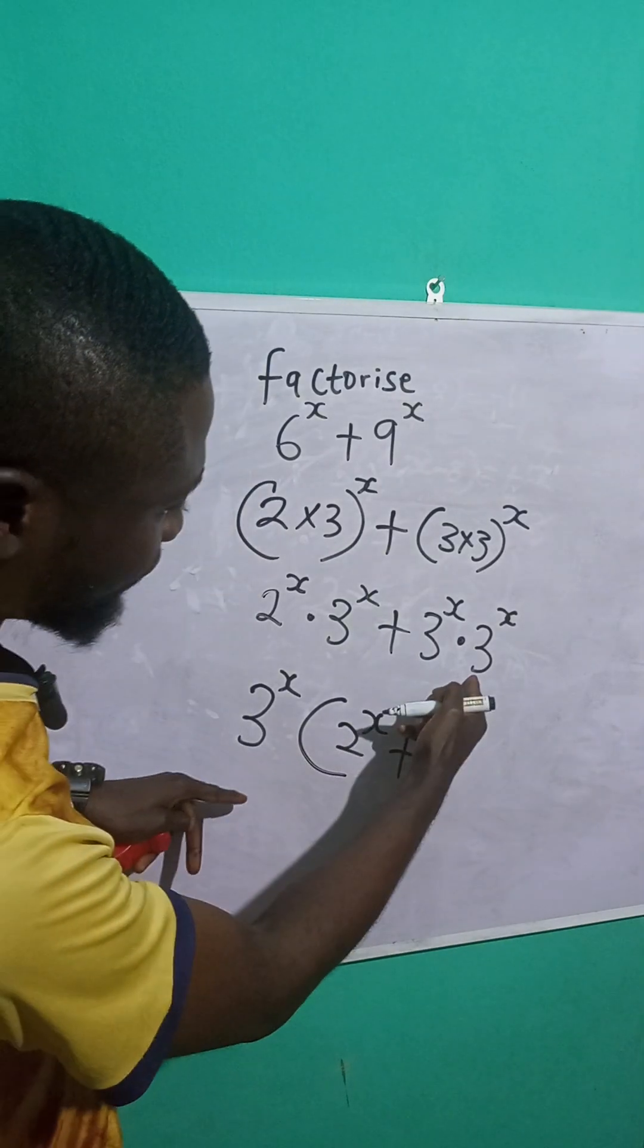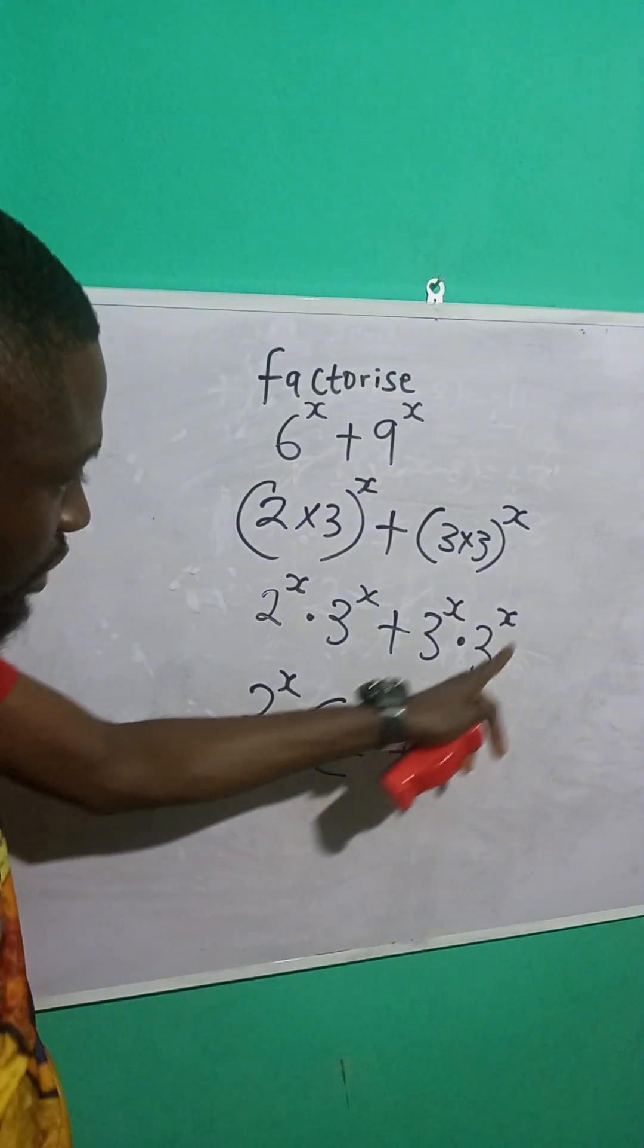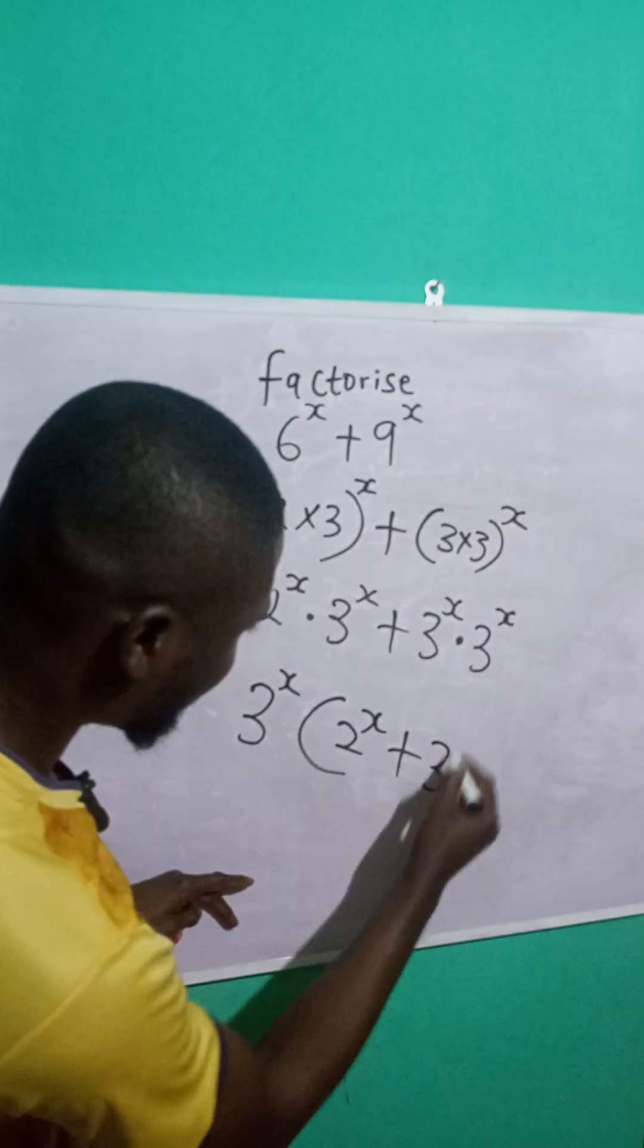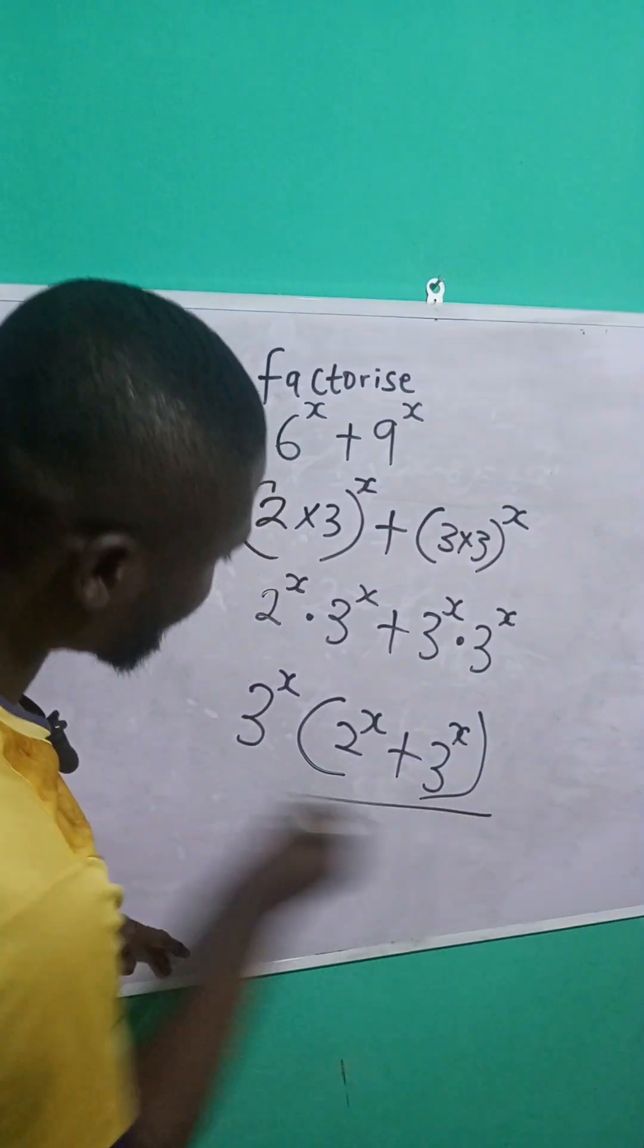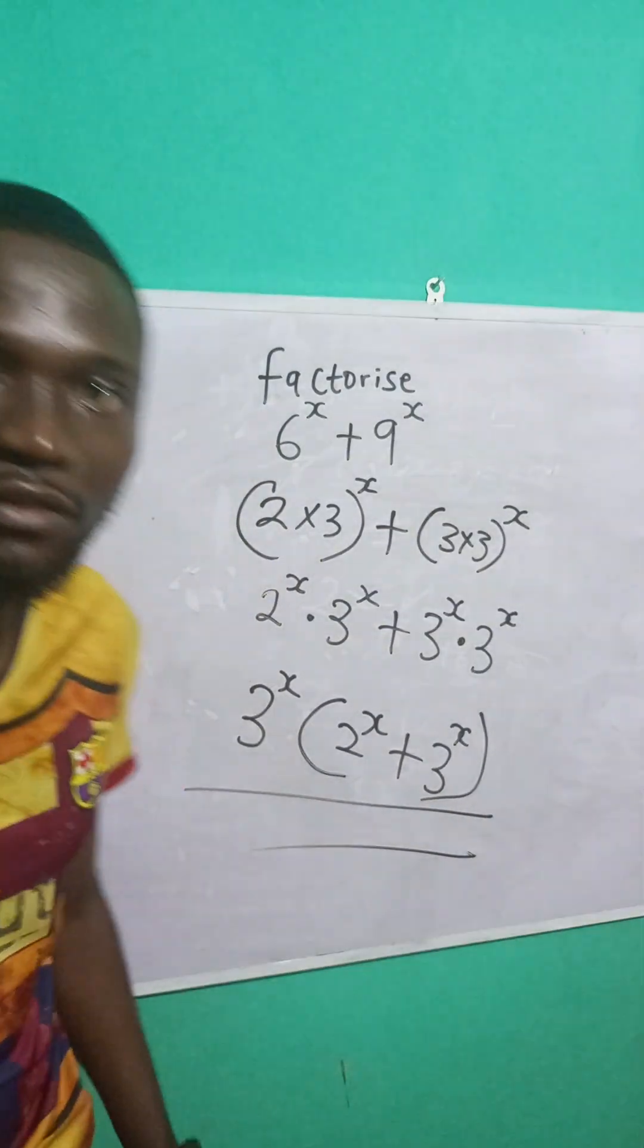Plus, 3 raised to the power of x divided by what we have here. If we cancel itself and we are left to 2 raised to the power of x. So, this is the factorized term.